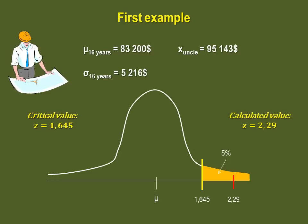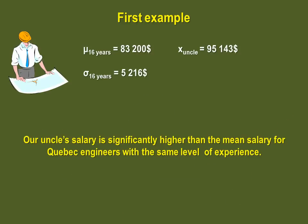As such, we must reject the null hypothesis. Step 7 asks us to summarize the results, so we can state that our uncle's salary is significantly higher than the mean salary for engineers in Quebec, with the same level of experience.